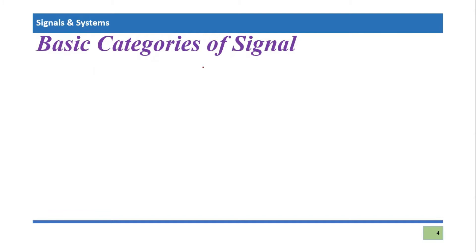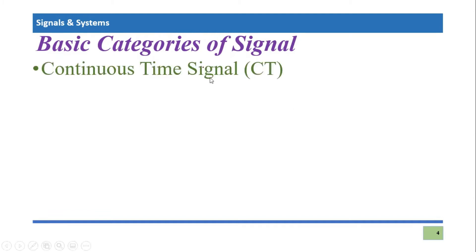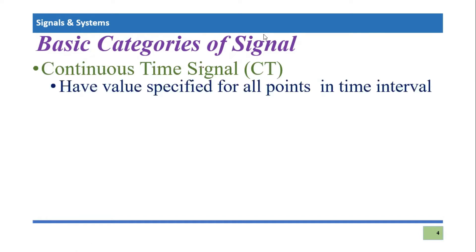So what are those classifications? Those are continuous time and discrete time signals. The first thing we are going to discuss is continuous time signal. A continuous time signal is a signal which has values specified for all the points in the time interval. By concept, one can say that it is a signal which is defined in a continuous manner for every point in the given time interval. There are many physical applications and examples which fall under the category of continuous time signal.